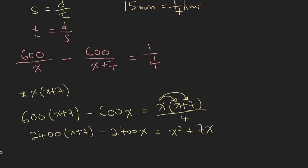So now, let's open up this bracket: 2400x and 2400 times 7. So 2400x, there is another 2400x here, but there's a negative sign, so it combines and gives you 0. So you are only left with 2400 times 7.